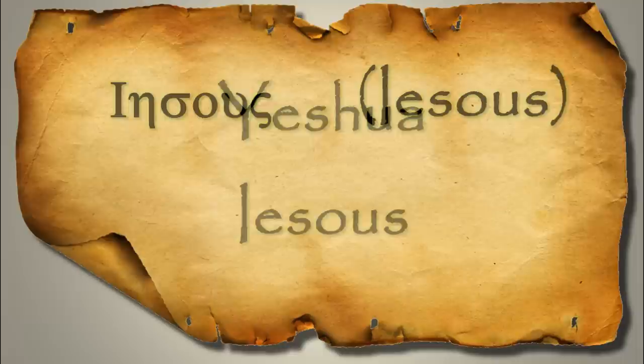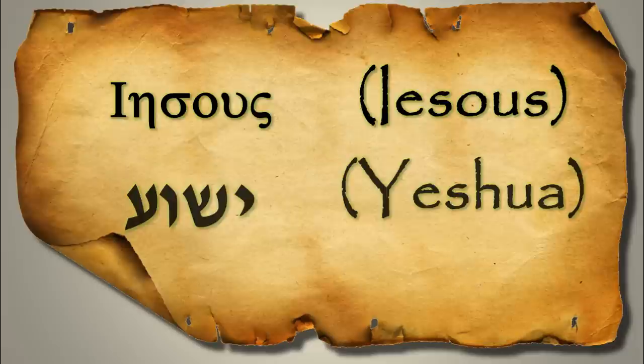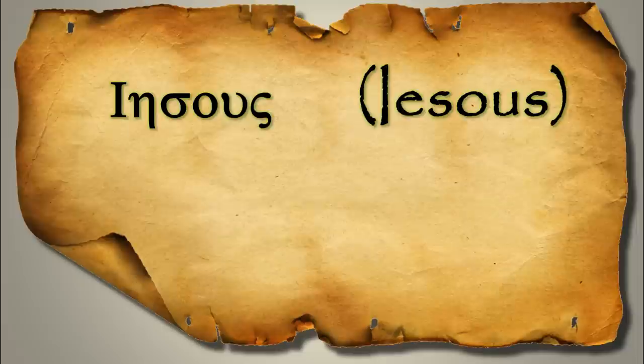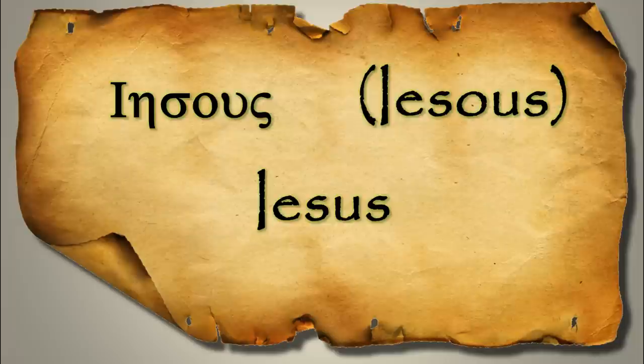When we come to the New Testament period, we find that the name of the Messiah is Yesus in the Greek New Testament, but we find that it is Yeshua in the Aramaic New Testament. When the Greek New Testament was translated into Latin in the 4th century, this name was written as Yesus — an exact match to the Greek that it came from.